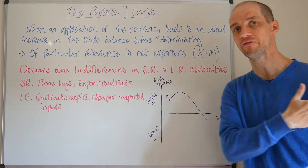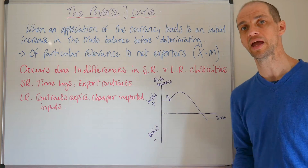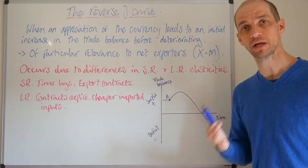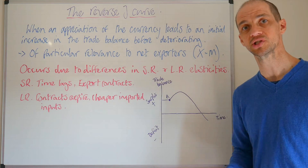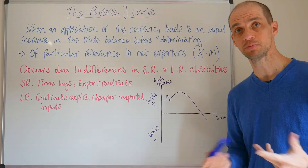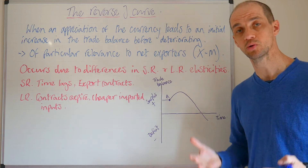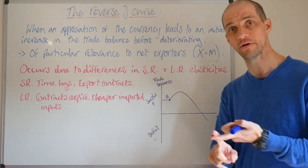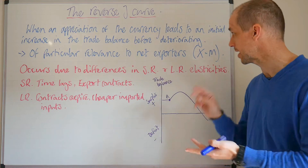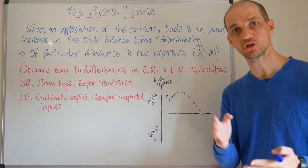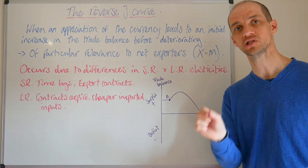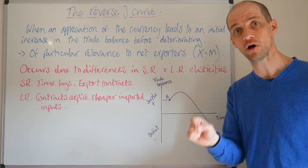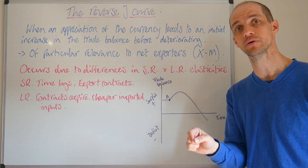So they export far more than they actually import and as such they run big trade surpluses. The most notable examples right now are of course China and Germany. Both countries are often cited as examples of countries that have undervalued currencies.